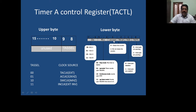There is one unused bit, then Timer A clear — if you put 0, the Timer A register is cleared; otherwise it is not. Then Timer A interrupt enable: if 0, interrupts are disabled; if 1, interrupts are enabled. Likewise, if the interrupt flag bit is 0, no interrupts have been raised; if it is 1, an interrupt request is pending. That is what we understand from the Timer A control register, which is 16-bit.